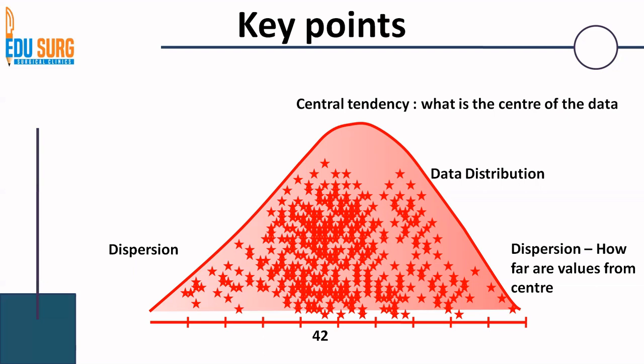When you plot a large number of data points and draw a curve, some values aggregate at a specific point and others are dispersed from it. This curve generated by plotting a large number of data is known as the data distribution or sample distribution curve. The centermost value is the measure of central tendency, and the extremes are the measures of dispersion — how far the values are from the center.